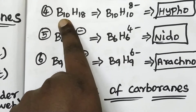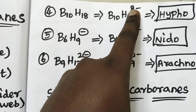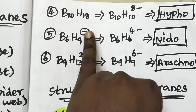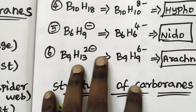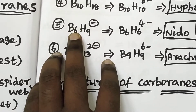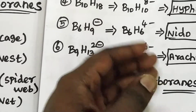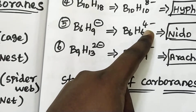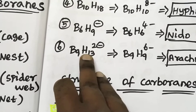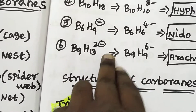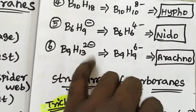For B10H18: we get 8-, which is a hypho structure. For B6H9 with a negative charge, you need to account for the charge. If we consider B6H9-, for nido, you place the boron accordingly. Then B9H19 has hydrogen 13, and B9H9 gives a charge of 4.